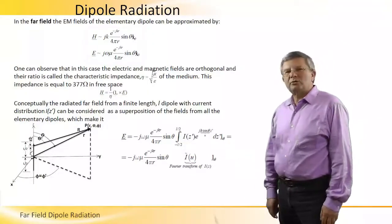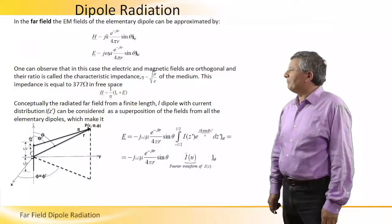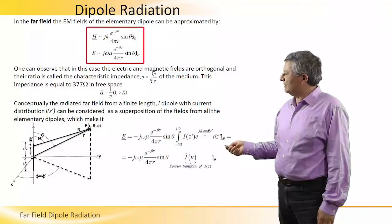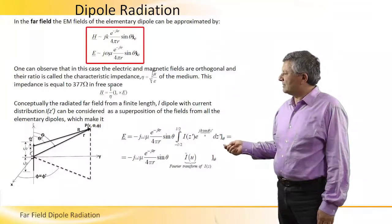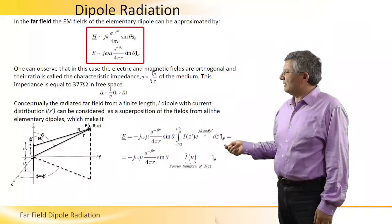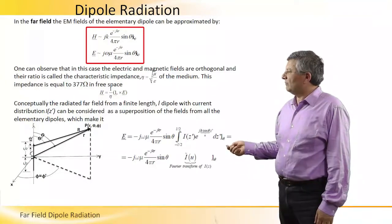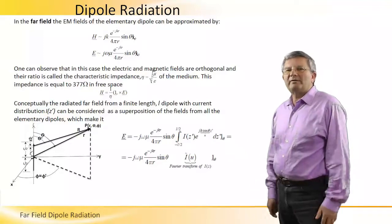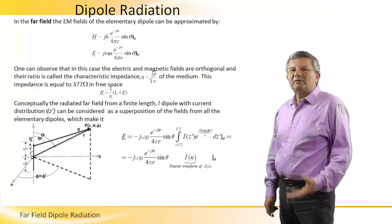What's interesting to note is that the amplitude dependence is 1 over R with the phase delay e to the minus jkr. And e to the minus jkr over 4πr represents a spherical wave propagating from the source.